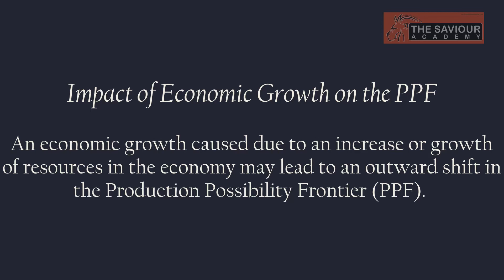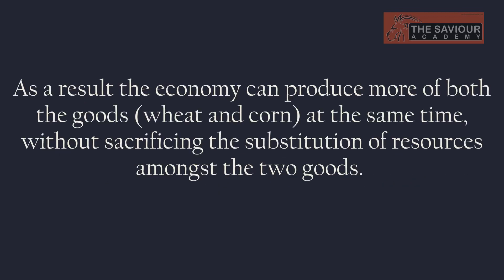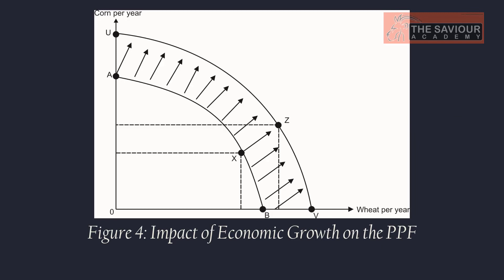Economic growth due to an increase in resources may lead to an outward shift in the production possibility frontier. As a result, the economy can produce more of both goods — wheat and corn — at the same time without sacrificing one for the other. As shown in the figure, overall growth of resources enables the economy to produce more; the PPF shifts outward from AB to UB. The economy moves from point X to point Z, and production of both goods increases.